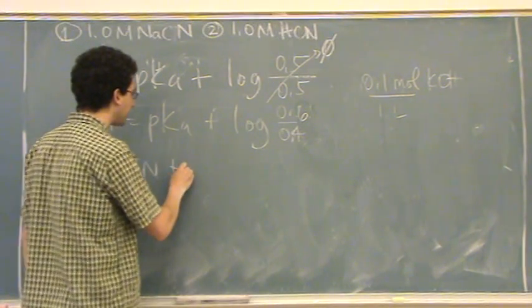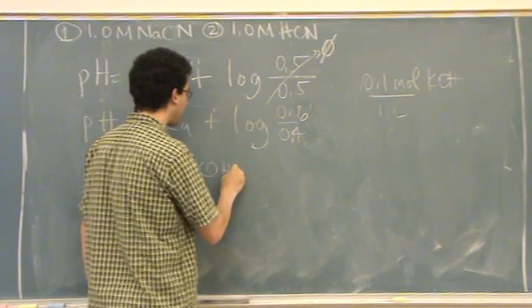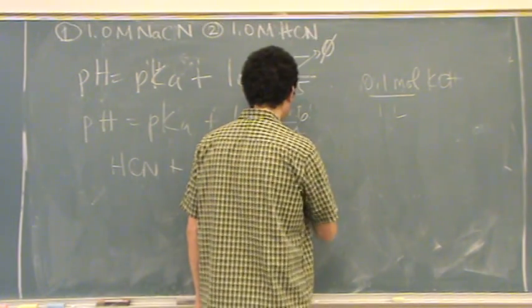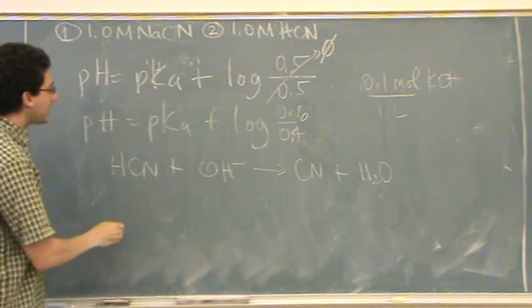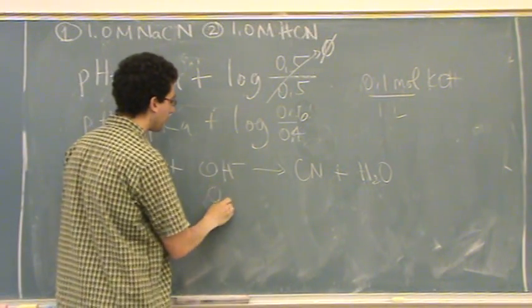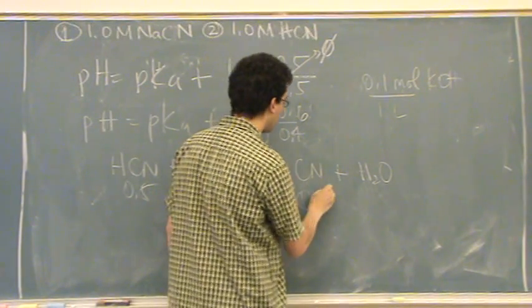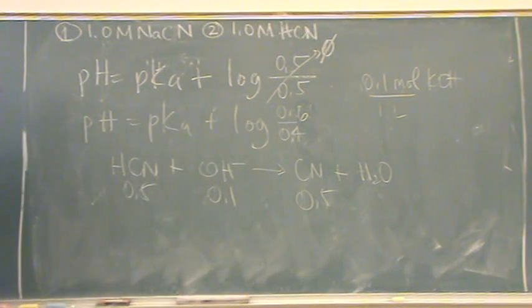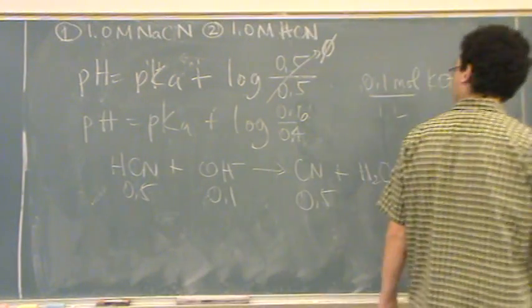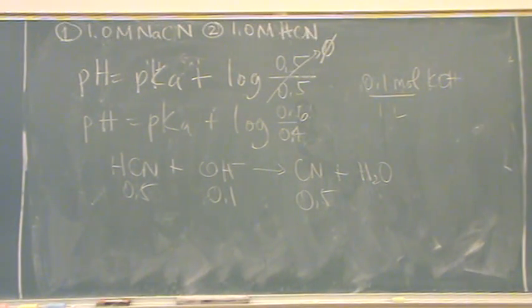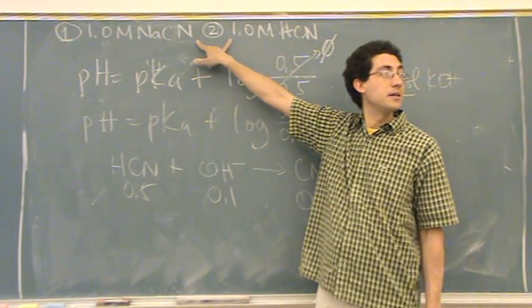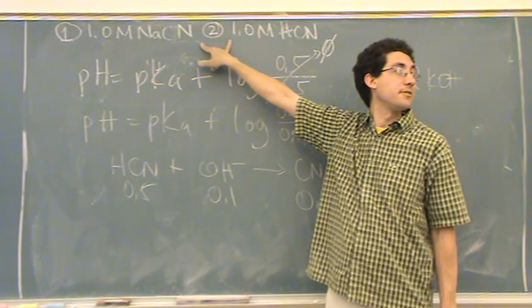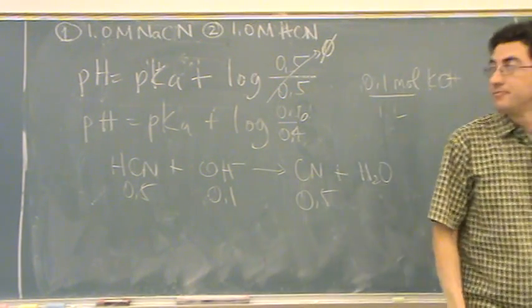HCN plus OH goes to CN plus H2O. HCN is 0.5, OH is 0.1, CN is 0.5. How do you know that CN is 0.5? CN is 0.5 from part D. I mix these two solutions of equal volumes and so the molarities will go down by one half.